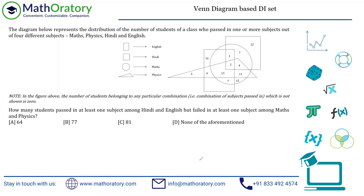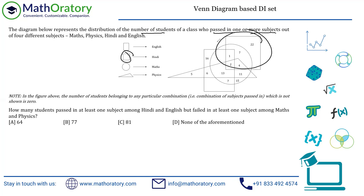This is a very straightforward set. I'll explain a few things before getting into the questions because it's a very easy set. This diagram represents the distribution of the number of students in a class who passed in one or more subjects out of four different subjects. It's a Venn diagram where different shapes indicate different subjects. You always have to check the legends. The rectangle indicates English, the square indicates Hindi, the circle indicates Maths, and the triangle indicates Physics.